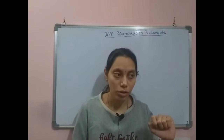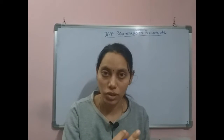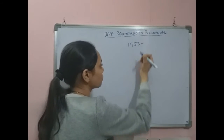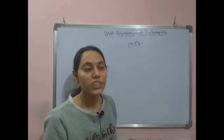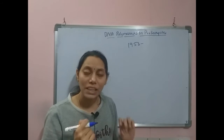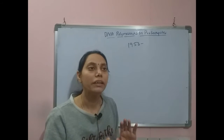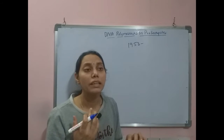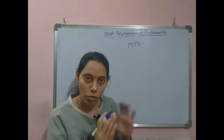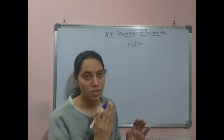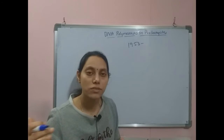In this video we are going to discuss how the discovery of different DNA polymerases was carried out. We will cover how DNA polymerase 1, 2, and 3 got identified. Going back to history, in 1953 Watson and Crick proposed the double helical model of DNA. According to this model, there are two strands, each complementary to the other, and each strand acts as a template to copy sequences into a new complementary strand. They also hypothesized that there must be an enzyme that can carry out this copying, and based on that hypothesis a race started to discover different polymerases in prokaryotes.